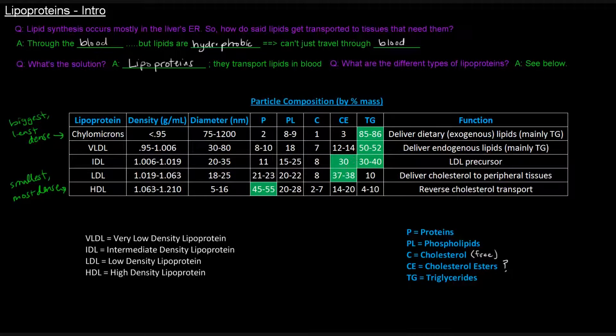IDL has a bunch of cholesterol esters and triglycerides. Because it's got both of those pretty high, it's not that useful in helping us determine what it is. Its function is just as an LDL precursor. We'll go into all these functions in more detail later. LDL is mostly cholesterol esters. Its job is to deliver cholesterol to the peripheral tissues. It makes sense that it's got a lot of cholesterol esters.